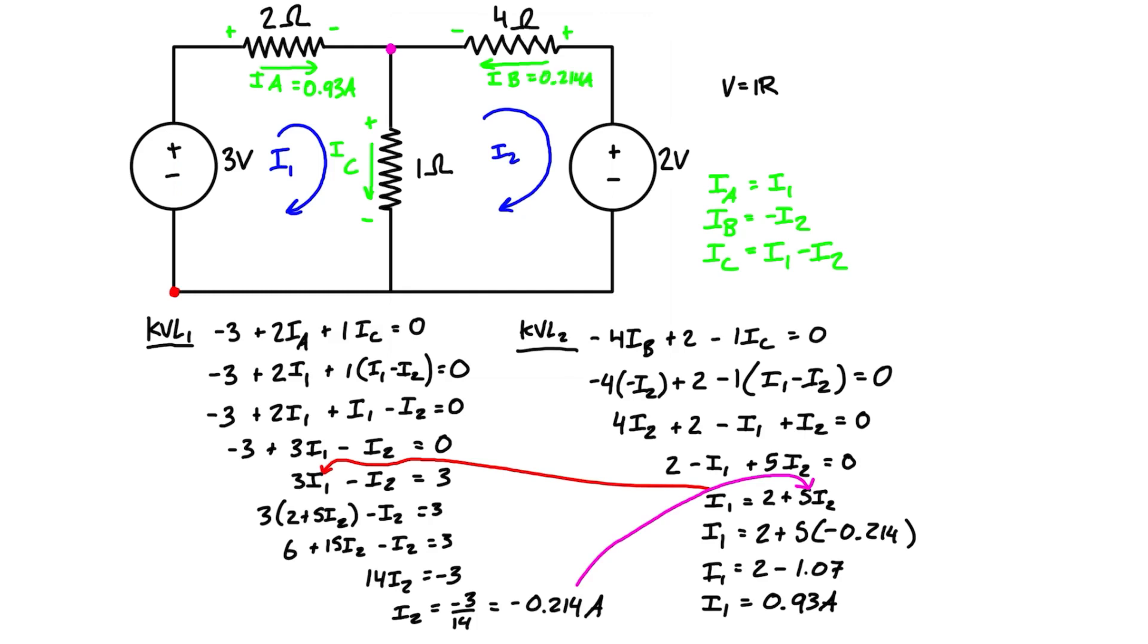So ib is equal to positive 0.214. Just notice that the negative sign just indicates it's going opposite the direction of i2, which was going the other way through this resistor. And then ic is just equal to i1 minus i2, so i1 is 0.93 minus negative 0.214, which is positive 1.144. So let's label that on here, it's equal to positive 1.144 amps going down through this resistor in the middle. And that checks out as well using Kirchhoff's current law at the junction, because 0.93 plus 0.214 is 1.144.